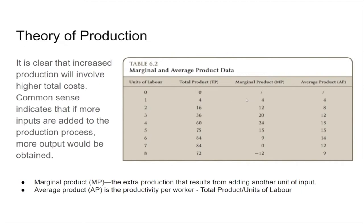Marginal product tends to have a progression where it goes up, reaches a maximum, and then starts coming back down again. Additional workers add a lot more output up to the point that we start running into inefficiencies. The highest marginal product occurs at four workers — that fourth worker contributed 24 units above three. The fifth worker only contributes 15 more, the sixth only nine more, and the seventh doesn't add anything. So marginal product is highest at four workers.